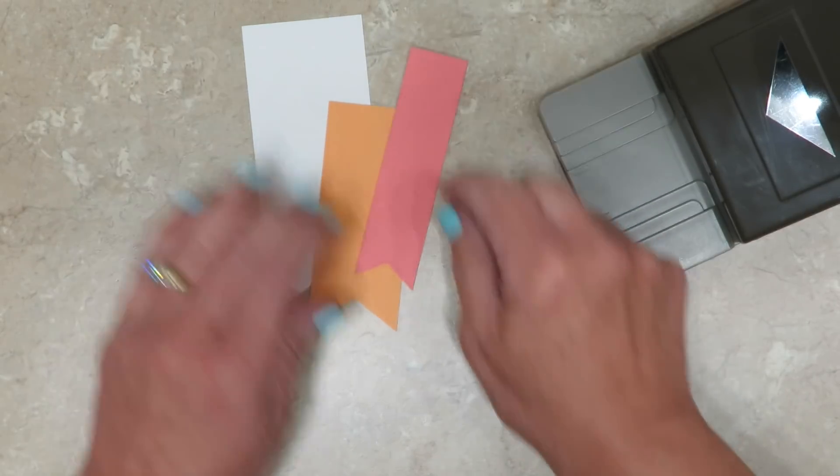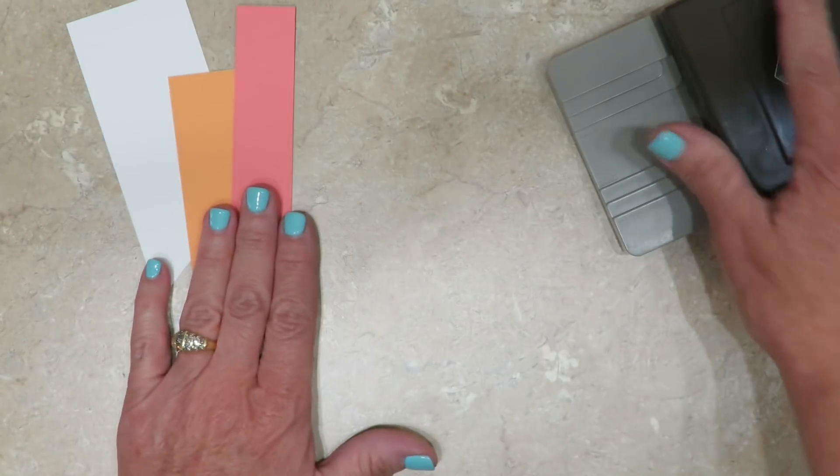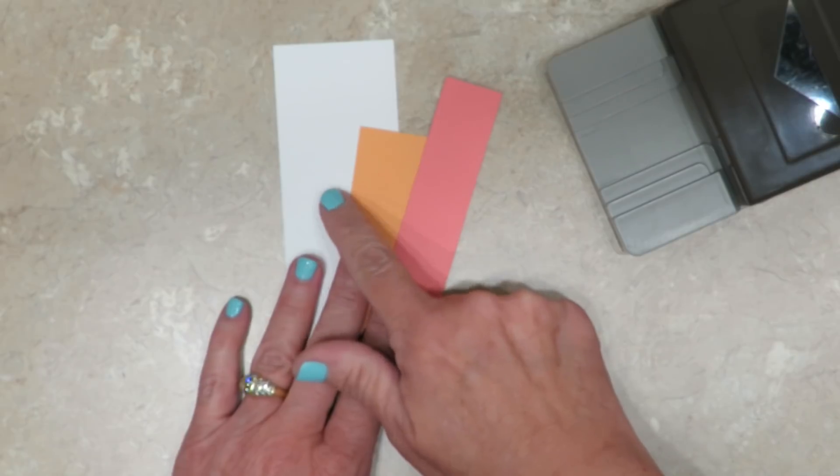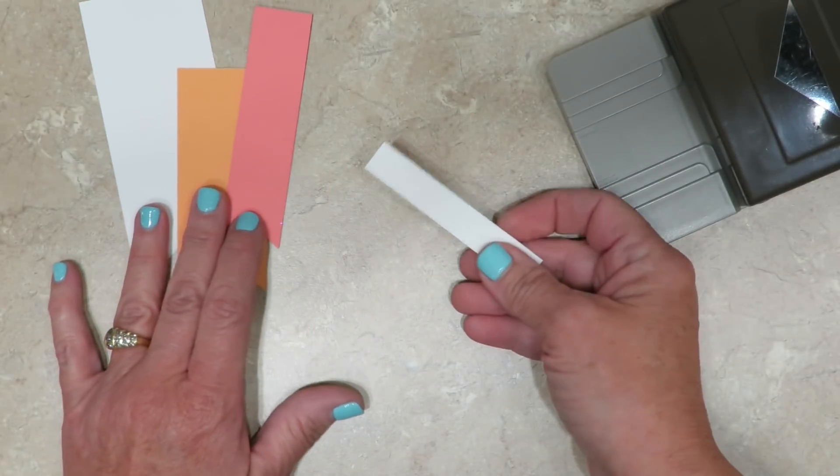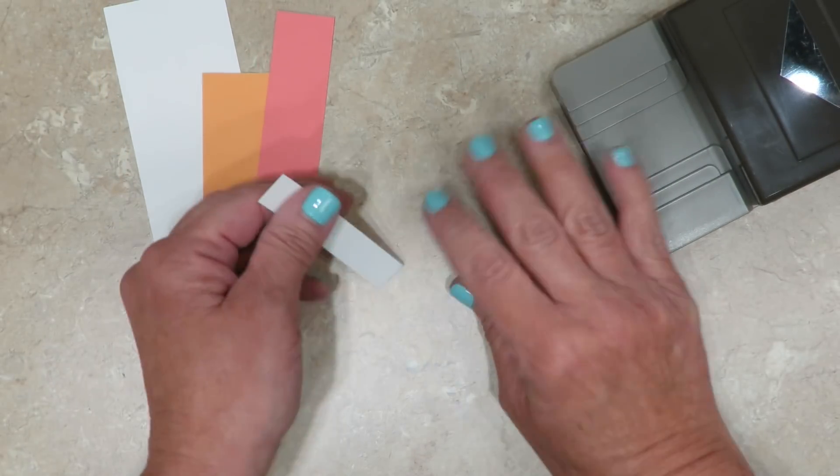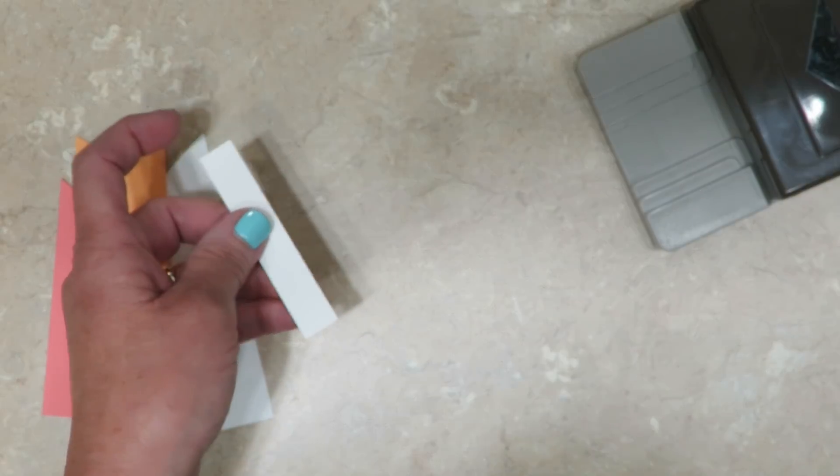So the punch actually will take care of three widths of cardstock. But what happens if you've got wider or you've got narrower? How do you get that perfect banner tip? Let me give you a tip on how to do that.